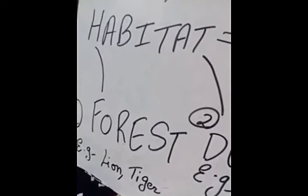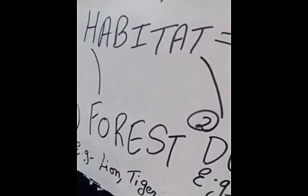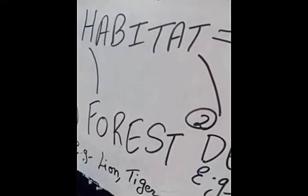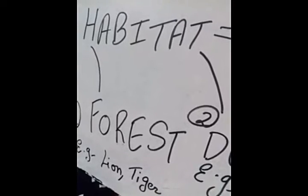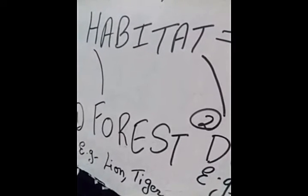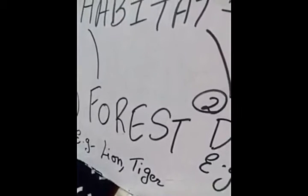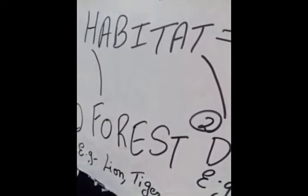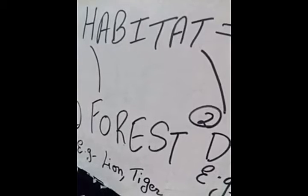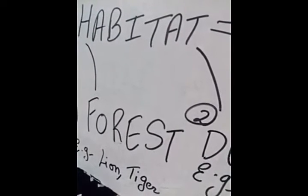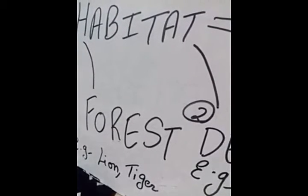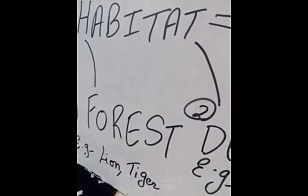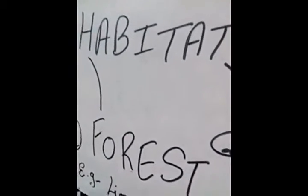A forest is a vast region covered densely by trees and different varieties of plants. It provides shelter to animals. Lion, tiger, deer, fox, and many others are examples of forest animals. It also gives shelter to animals like hare, rabbit, and snake that live inside burrows. Small animals and insects are also found in the forest.